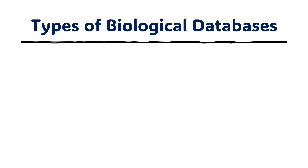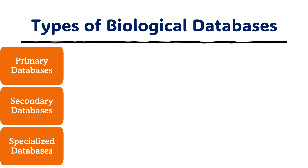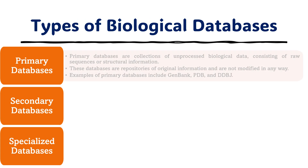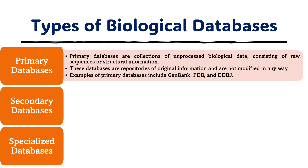There are three categories of biological databases: primary, secondary, and specialized. Primary databases are collections of unprocessed biological data, referred to as raw data, consisting of raw sequence or structural information. These primary databases are repositories of original information and are not modified in any way. Some examples of primary databases are GenBank, where we have information about genes; PDB, the protein database; and DDBJ.